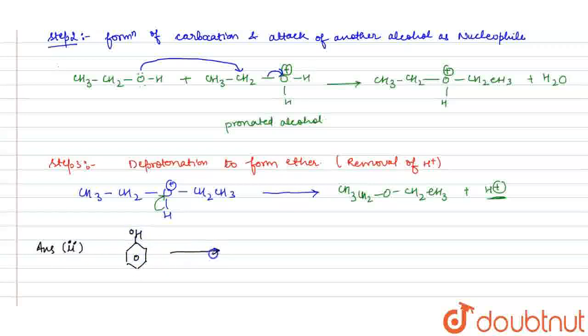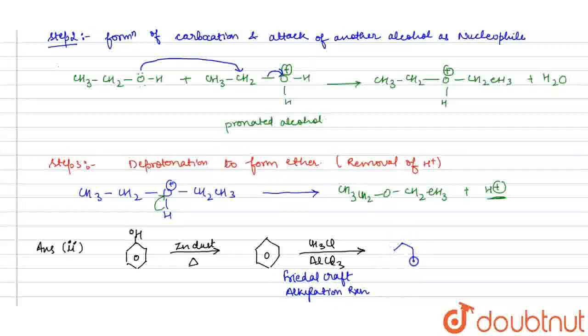Phenol in the presence of zinc dust is heated to form benzene. This benzene, in the presence of methyl chloride plus aluminum chloride, undergoes Friedel-Crafts alkylation reaction. It gives toluene plus HCl. This is benzene and this is toluene. Thank you.